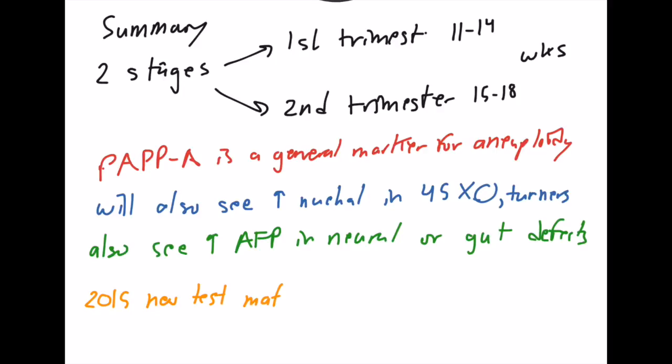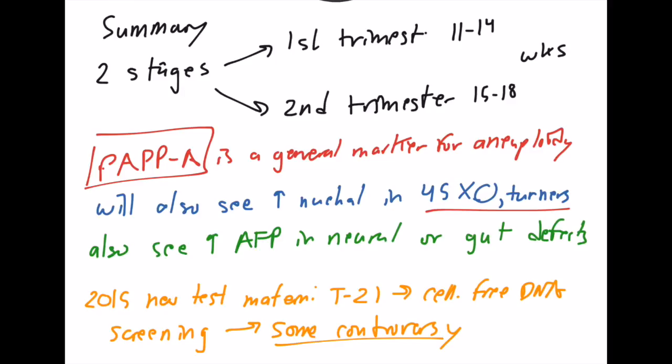One last point for your own edification. In 2015, there was a new test called the maternity T21 that can test cell-free DNA in the mother, and that can actually test for Down syndrome. It's somewhat controversial, just like all these tests are, because it has to do with the fact that you can find out about these genetic abnormalities in a child.